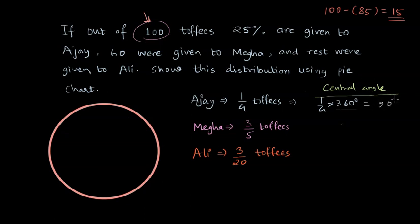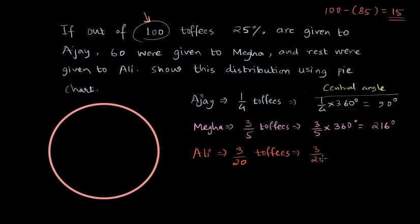The central angle for Ajay's sector is 1/4 times 360, which is 90 degrees. For Megha, the central angle is 3/5 times 360 degrees, which is 216 degrees. And for Ali, the central angle is 3/20 times 360 degrees, which is 54 degrees.